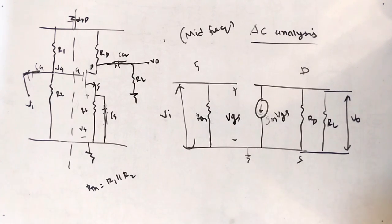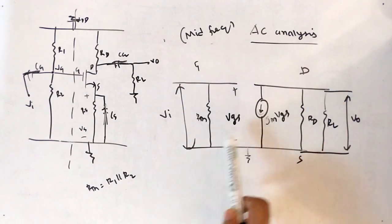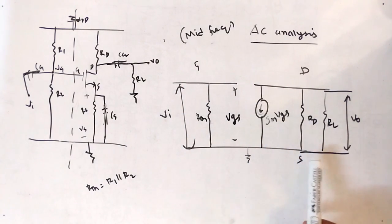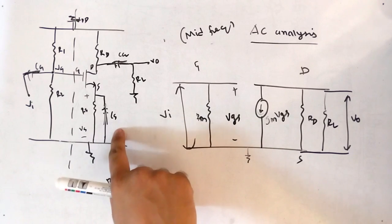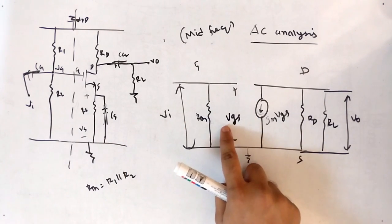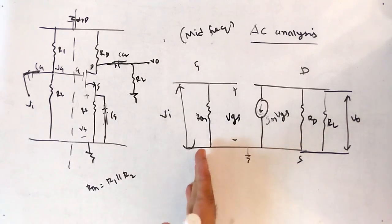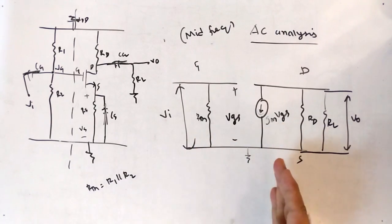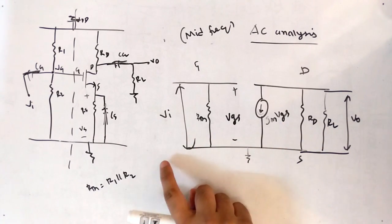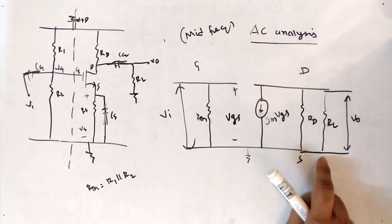Recap of the mid-frequency AC analysis circuit: first we have the gate, then drain, then source — source and ground are the same because of bypass capacitor CS. We have the two components VGS and the current source GM·VGS. Then we have the input side with VI and RTH, and the output side with VO, RD, and RL.